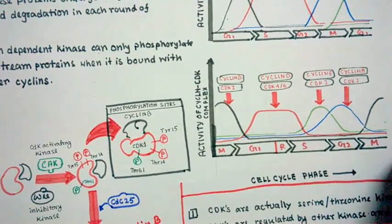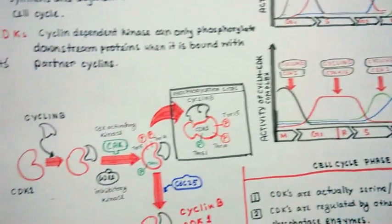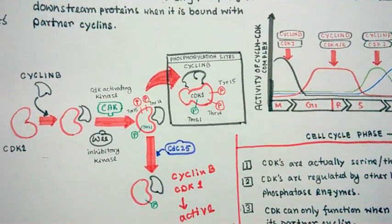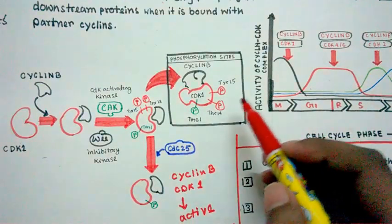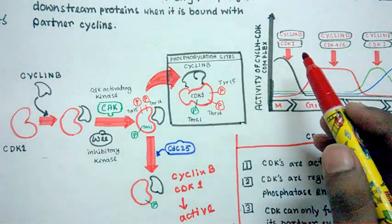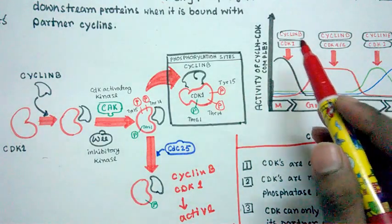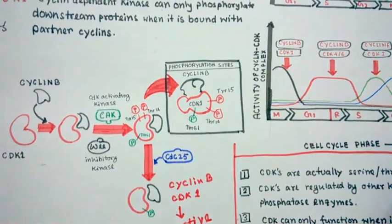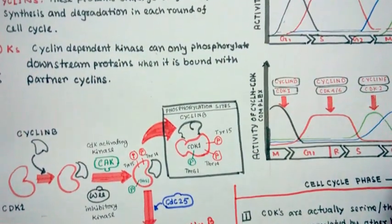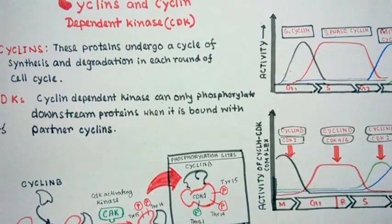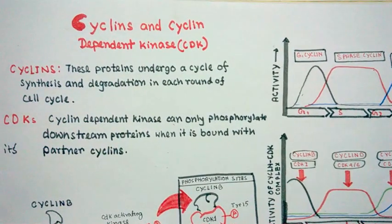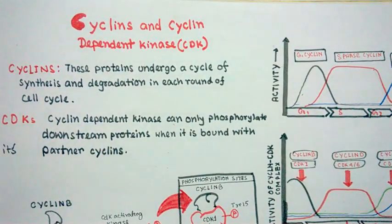For simplicity I showed only one example — how cyclin B and CDK1, the M phase cyclin, is regulated. I hope you enjoyed the video. Please like and subscribe for more videos. Thank you.